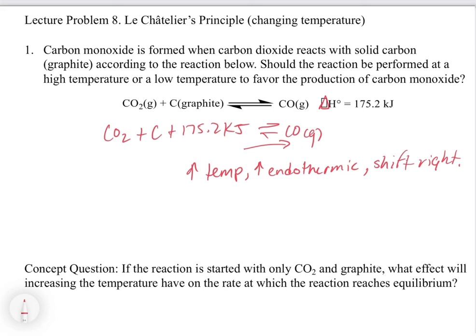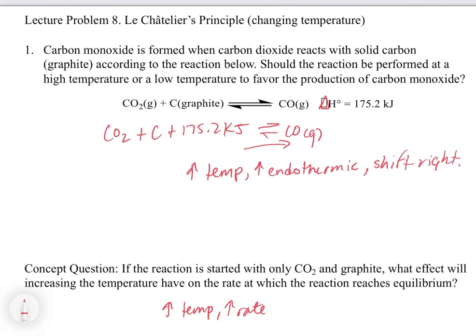If the reaction is started with only CO₂ and graphite, increasing temperature will increase the rate at which the reaction reaches equilibrium. We know from kinetics that increasing temperature increases the rate constant. As temperature goes up, the rate constant also goes up because of more collisions. So the reaction will get to equilibrium faster because it's at a higher temperature — we're going to get more collisions and more reactions.